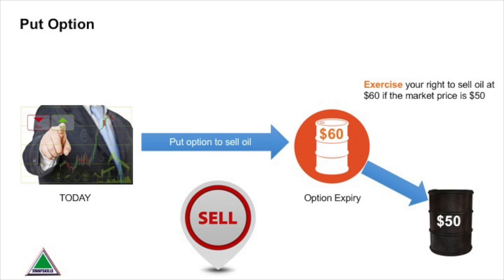Again, you would probably get a net cash amount to compensate you for the price difference, rather than actually selling physical barrels of oil to the bank. As an aside, the largest users of commodity derivatives are speculators, while the largest users of equity derivatives are portfolio managers buying puts to protect the downside price risk on their holdings.